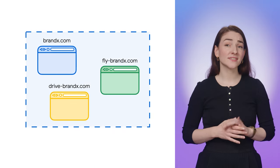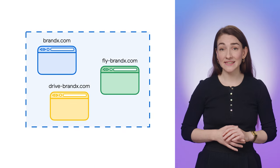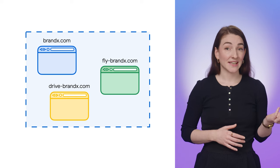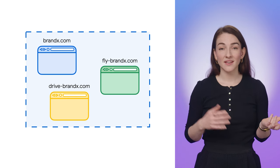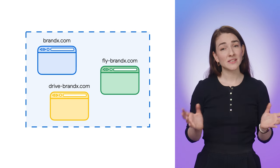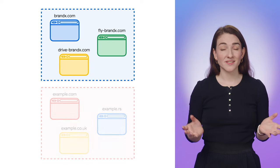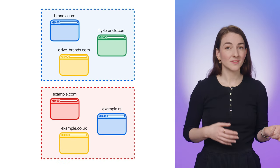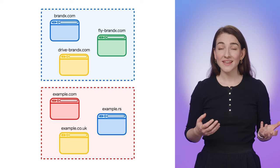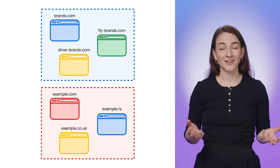So let's see why we need related website sets. Many organizations have related sites with different domain names, such as brandx.com and flybrandx.com, or domains for different countries, such as example.com, example.rs, example.co.uk, and so on.